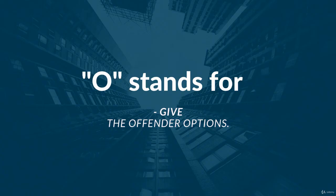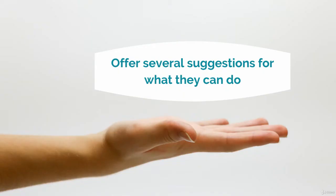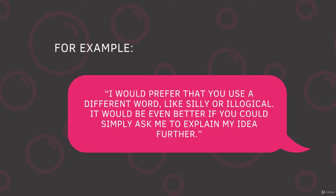O stands for Give the offender options. In addition to telling the person what you don't want them to do, offer several suggestions for what they can do. For example: 'I would prefer that you use a different word, like silly or illogical. It would be even better if you could simply ask me to explain my idea further.'